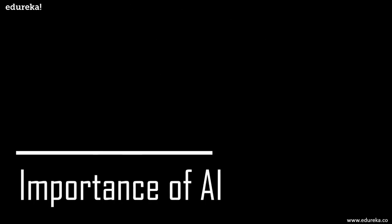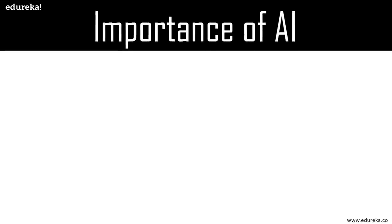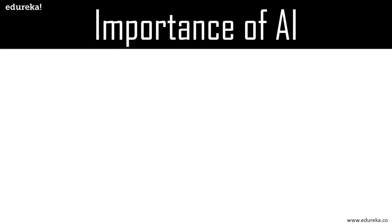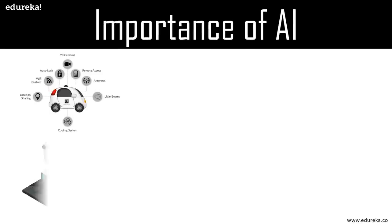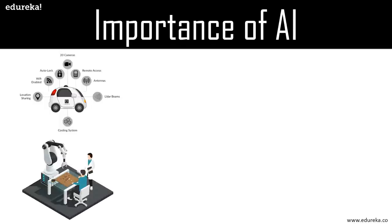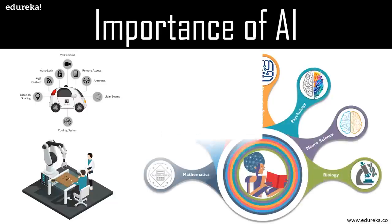AI has made it possible for machines to learn from experience and grow to perform human-like tasks. Flashy examples like self-driving cars and chess-playing computers rely heavily on deep learning and natural language processing. Using these technologies, computers can be trained to accomplish specific tasks by processing large amounts of data and recognizing patterns in that data.